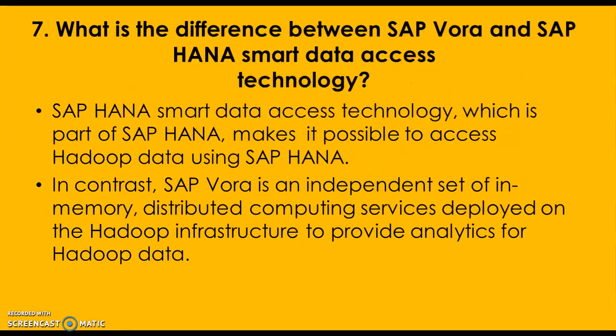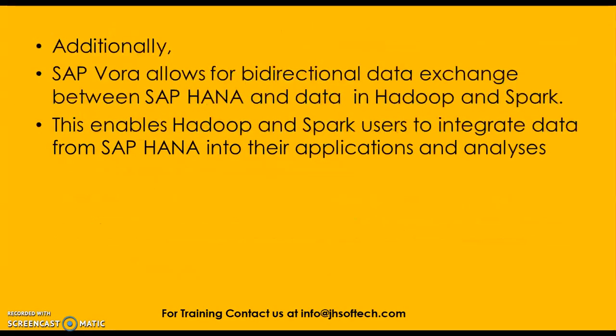What is the difference between SAP Vora and SAP HANA smart data access technology? SAP HANA smart data access, which is part of SAP HANA, makes it possible to access Hadoop data using SAP HANA. In contrast, SAP Vora is an independent set of in-memory distributed computing services developed on Hadoop's infrastructure to provide analytics for Hadoop data. Additionally, SAP Vora allows bidirectional exchange of data between SAP HANA and data in Hadoop and Spark, enabling Hadoop and Spark users to integrate data from SAP HANA into their applications and analysis.